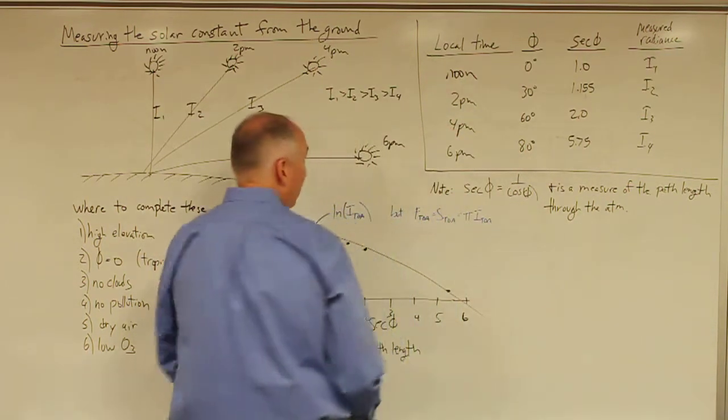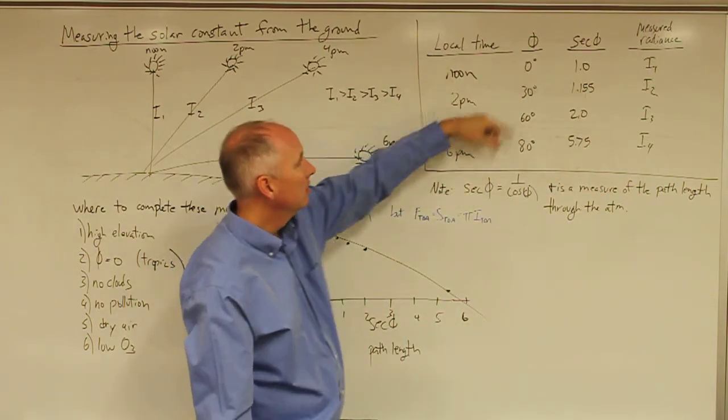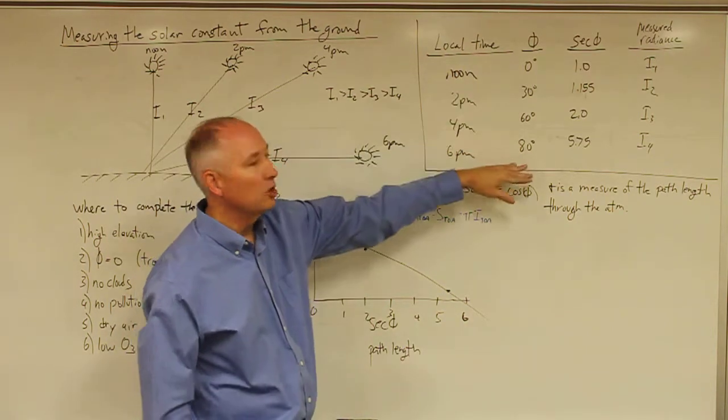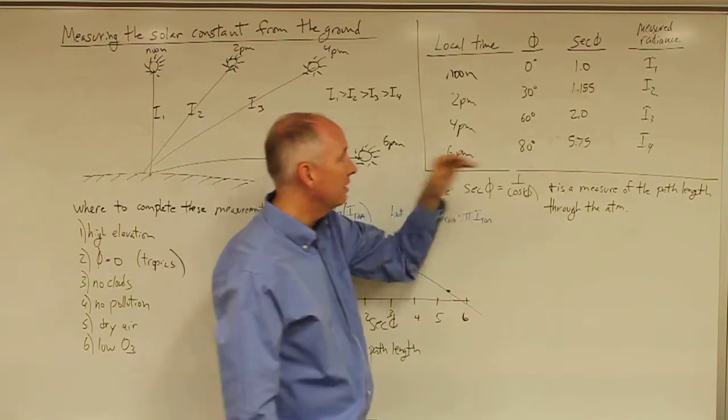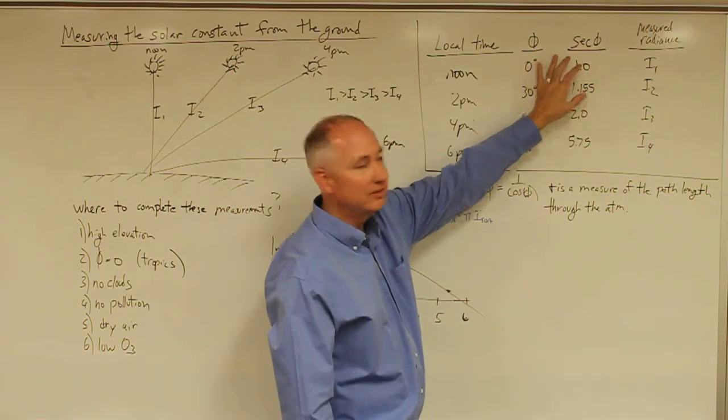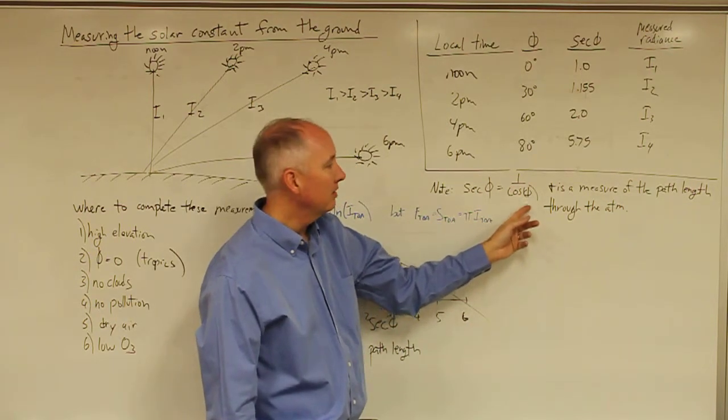So what we can do is we can create a table that shows local time, the measured zenith angle starting off with zero directly overhead and almost 90 degrees near sunset. And then we have a column that is the secant of the zenith angle. Recall that the secant is one over the cosine of the zenith angle.